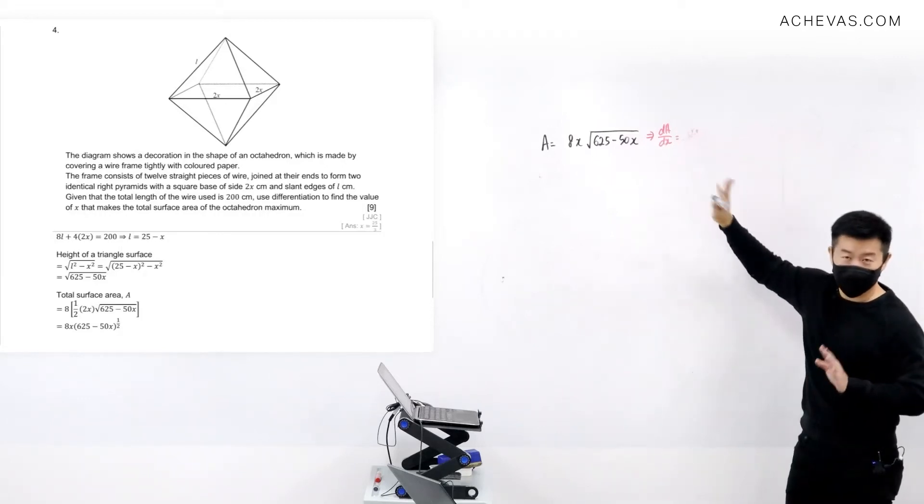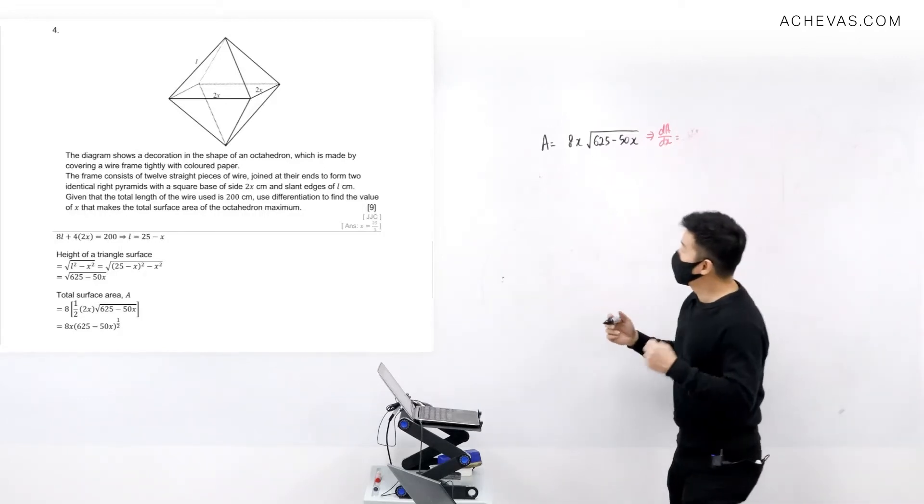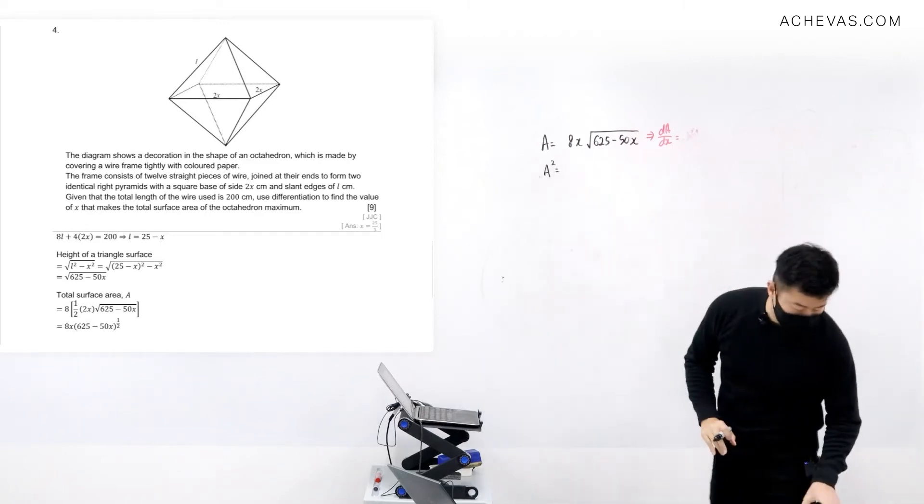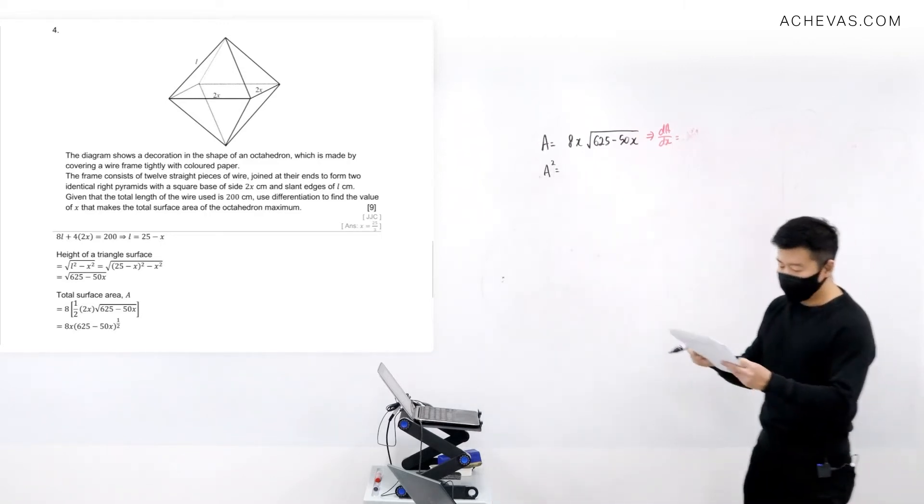So look at this. I can do this. If I were to square both sides, if I were to square both sides...